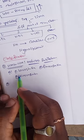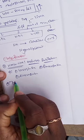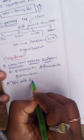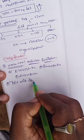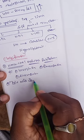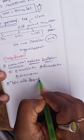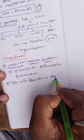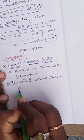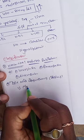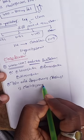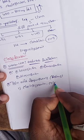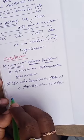The second classification is bile acid suppressants, also called resins. Examples include cholestyramine and cholestipol.